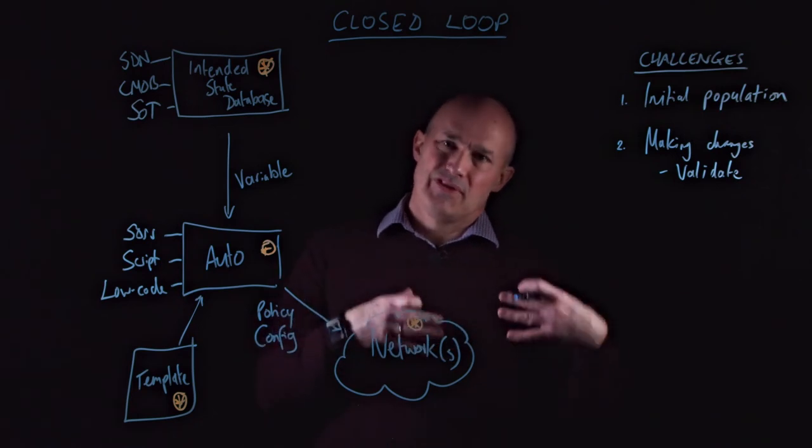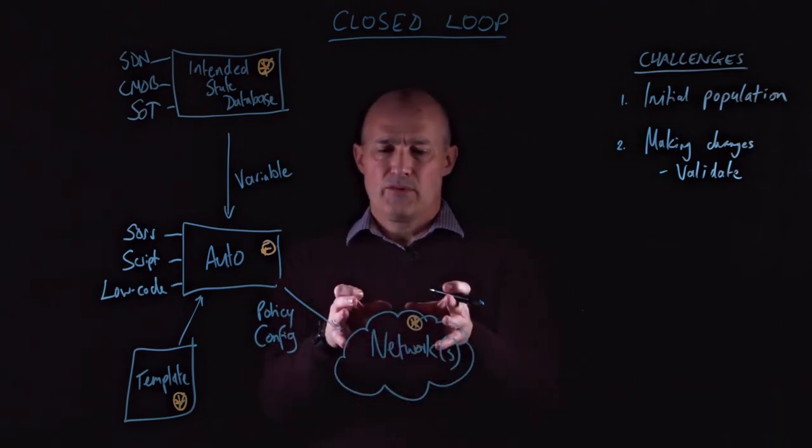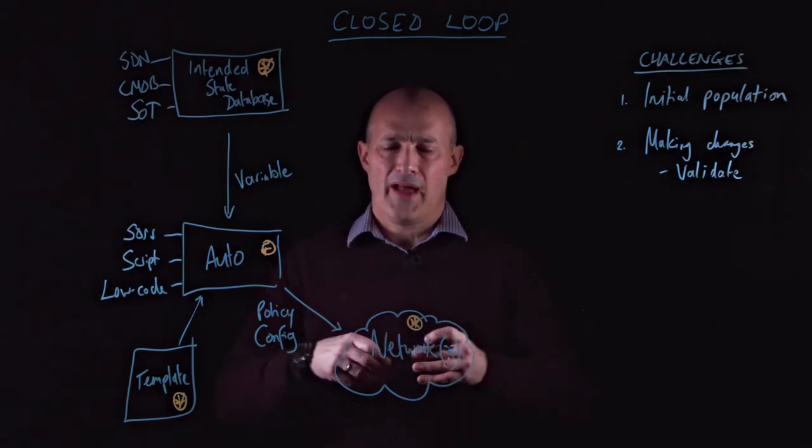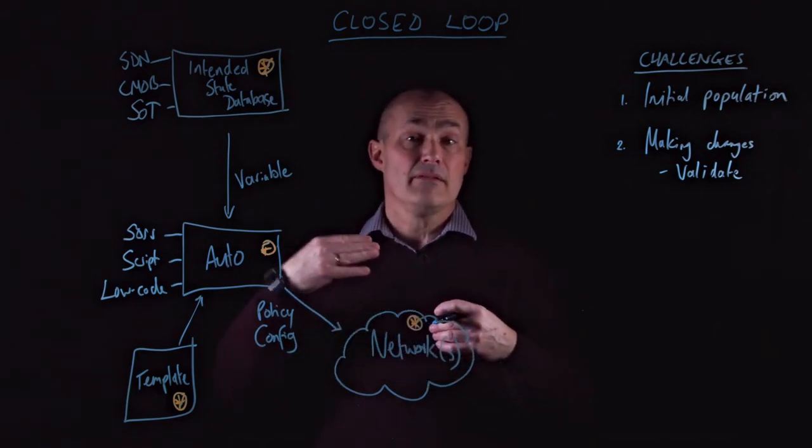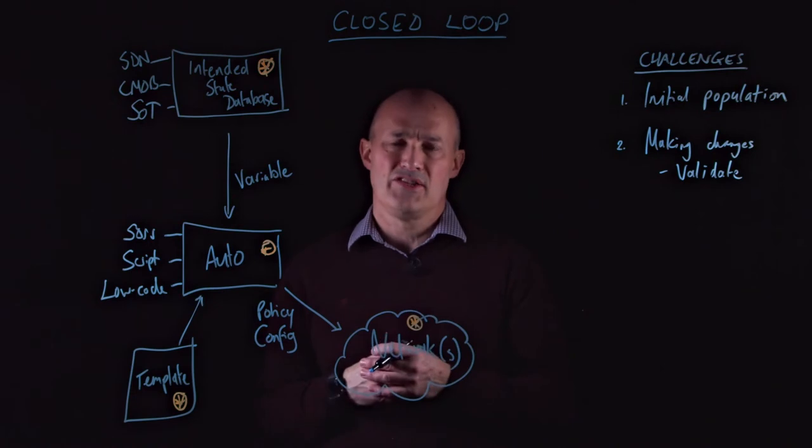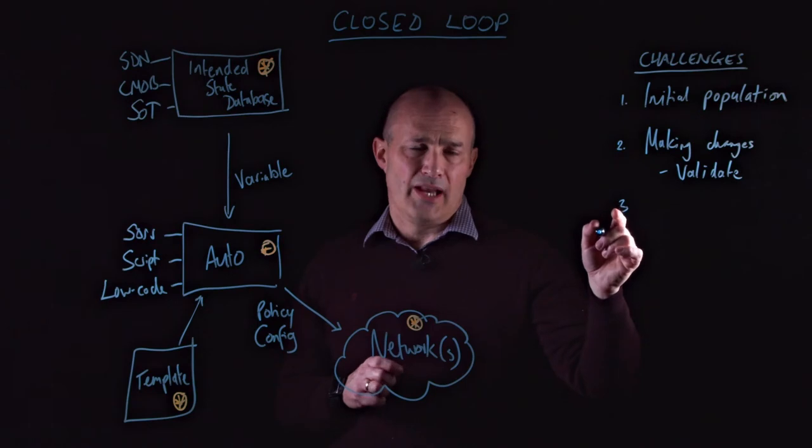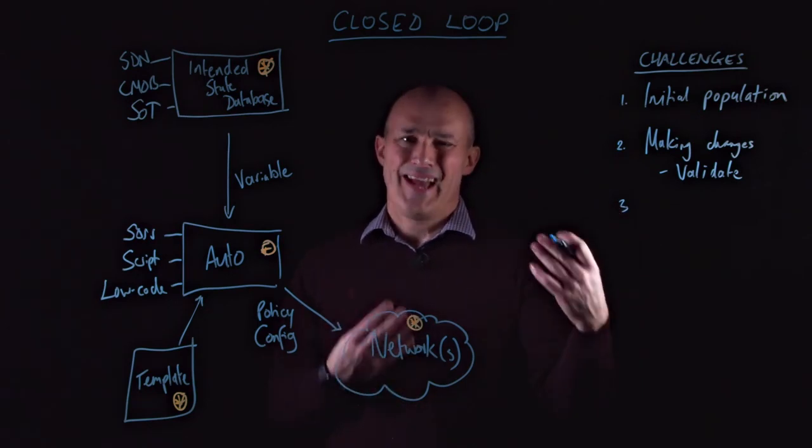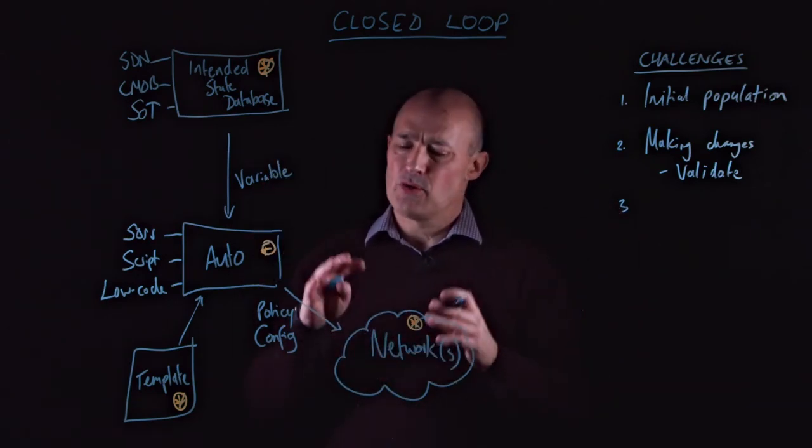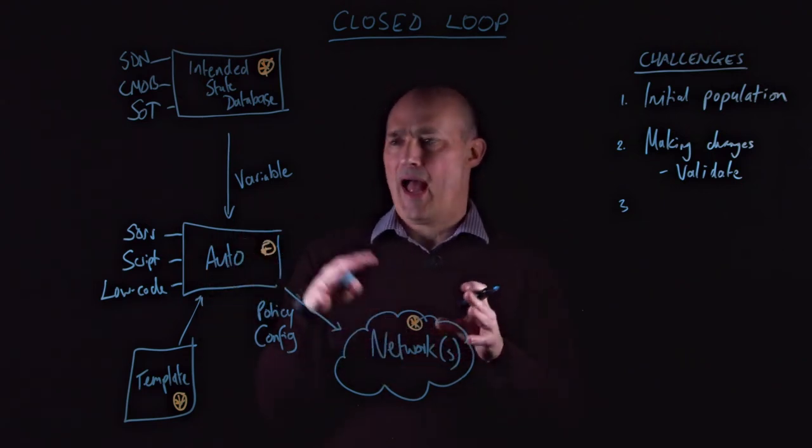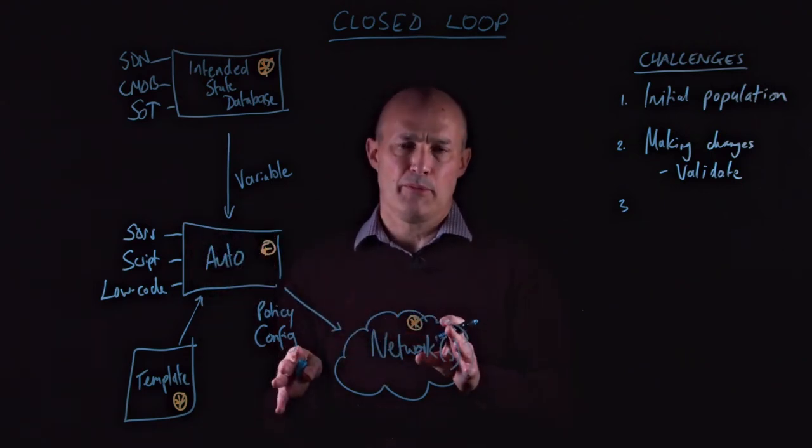And of course, as a result of those changes, things will be updated in the network itself. That network needs to be documented after the changes have been made. And the best way of doing that, of course, is automation. So the third challenge really then is about maintaining our intended state database once things have been pushed into the network and once we have our automation platform in place.